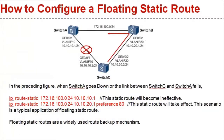For example, in the preceding figure, when switch A goes down or the link between switch C and switch A fails, the static route with preference value 60 will become ineffective and the static route with preference value 80 will come into play. This scenario is a typical application of a floating static route.